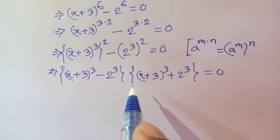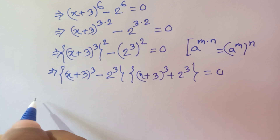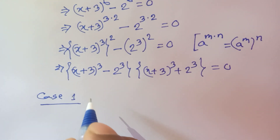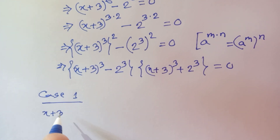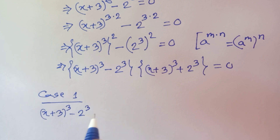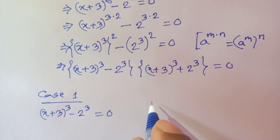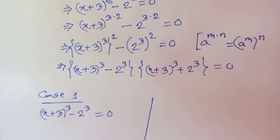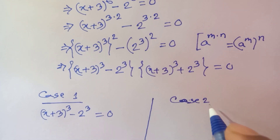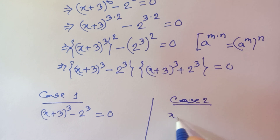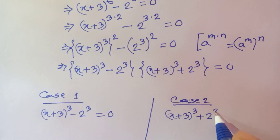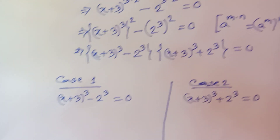We have two solution cases. Case 1: x plus 3 whole cube minus 2 cube is equal to 0. Case 2: x plus 3 whole cube plus 2 cube is equal to 0.